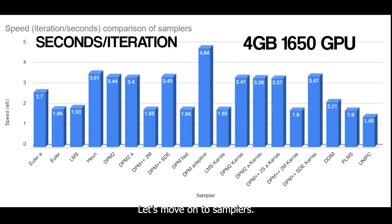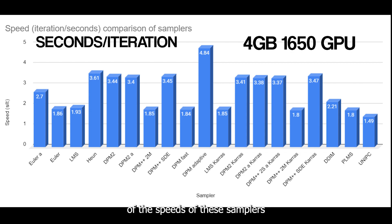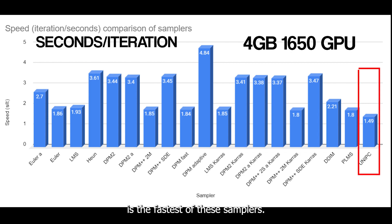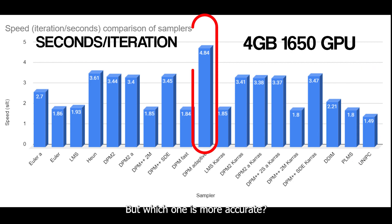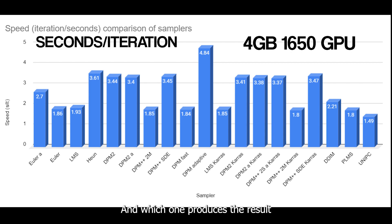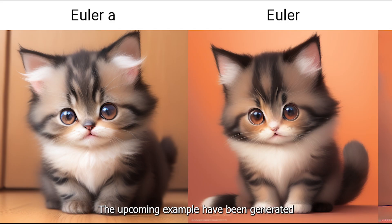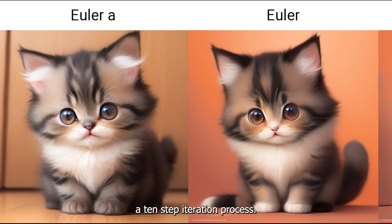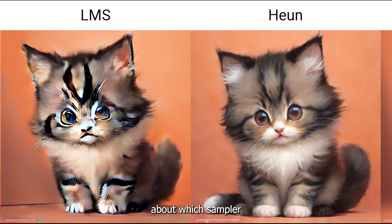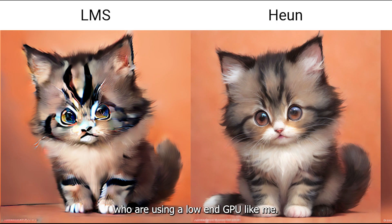Let's move on to samplers. Let's compare the speeds first. As you can see, UniPC is the fastest of the samplers while DPM Adaptive is the slowest. The upcoming examples have been generated using the same seed and underwent a 10-step iteration process. The examples will also give you an idea about which sampler makes a decent-looking image in fewer steps, which is very useful for people using a low-end GPU.